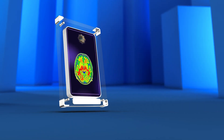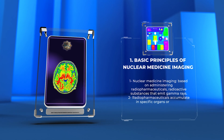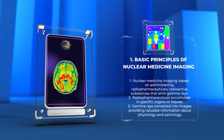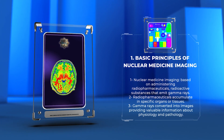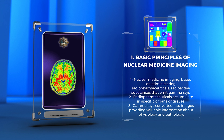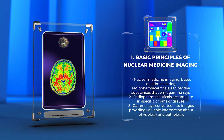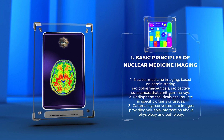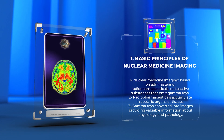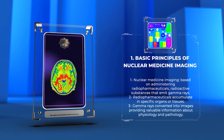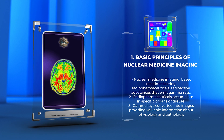Nuclear medicine imaging is based on the principle of administering radiopharmaceuticals, which are radioactive substances that emit gamma rays into the body. These radiopharmaceuticals selectively accumulate in specific organs or tissues, allowing their activity to be measured using specialized detectors. The emitted gamma rays are then converted into images that provide valuable information about the physiology and pathology of the targeted area.